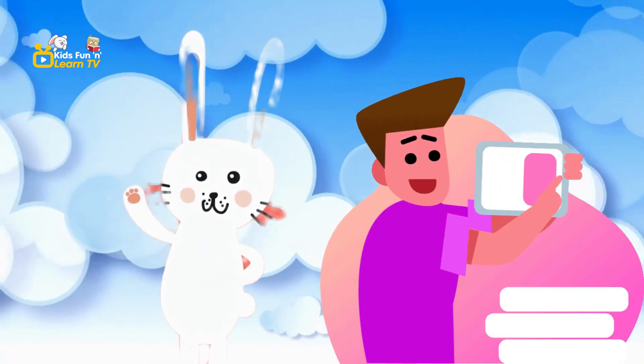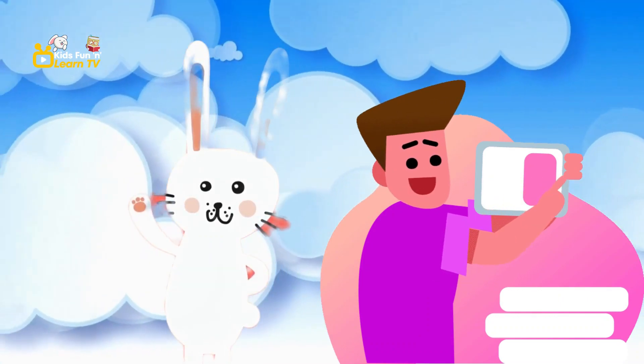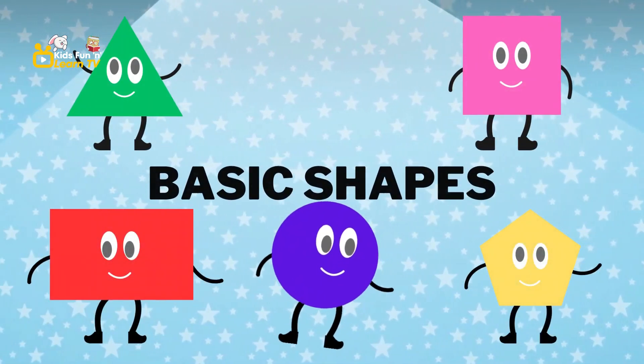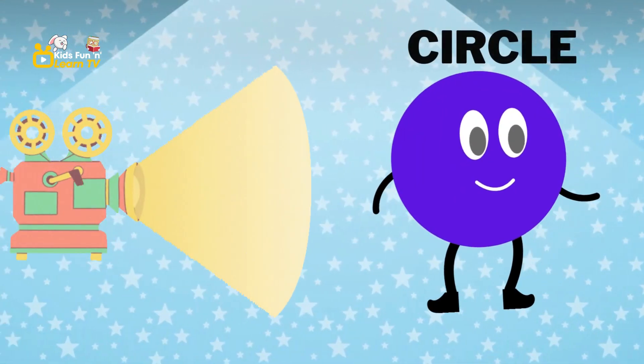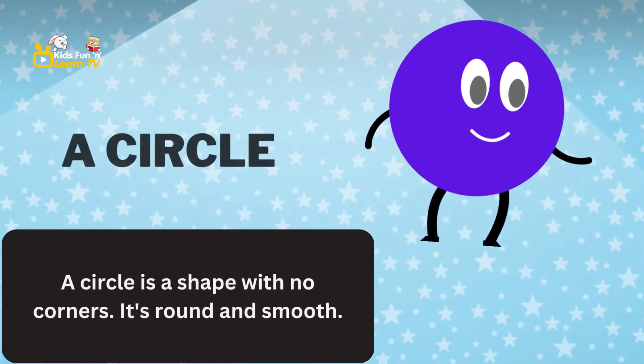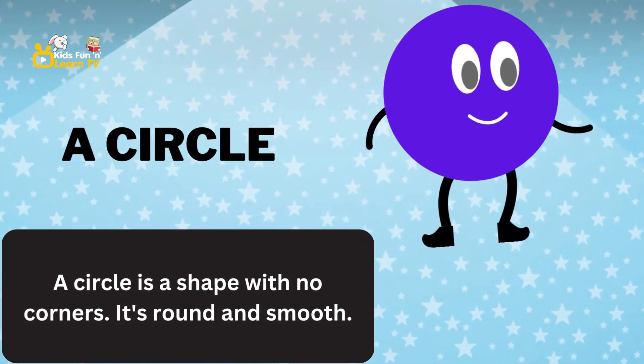Hi kids, welcome to our shapes name learning video. In this video we're going to learn about the basic shapes. Let's start with the circle. A circle is a shape with no corners. It's round and smooth.